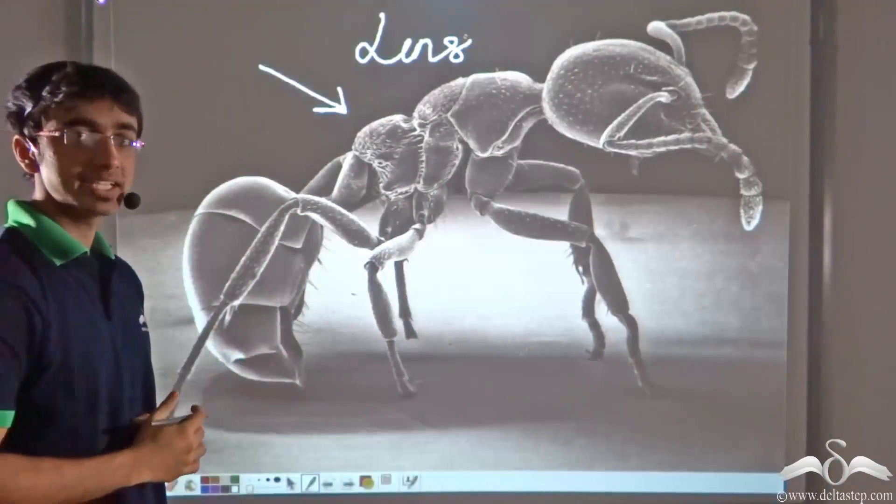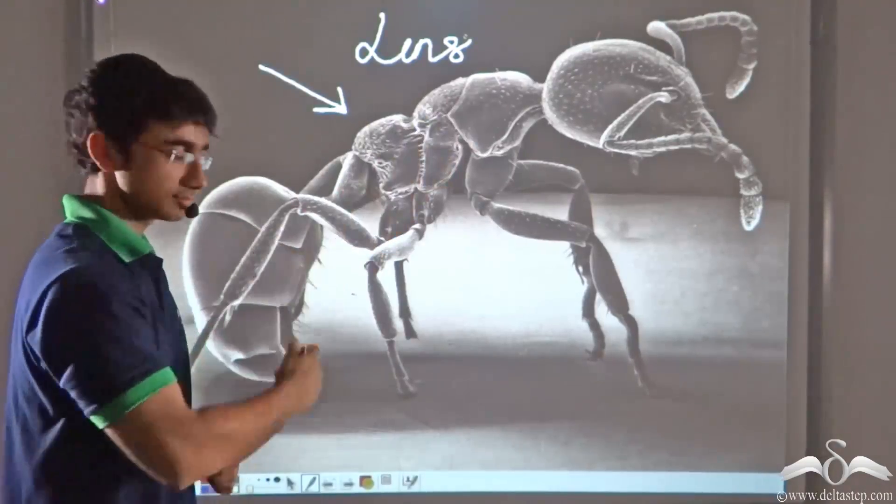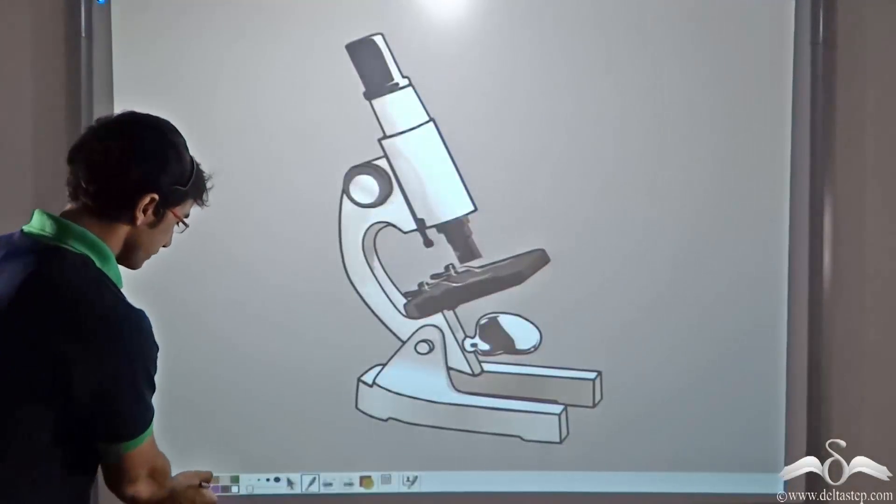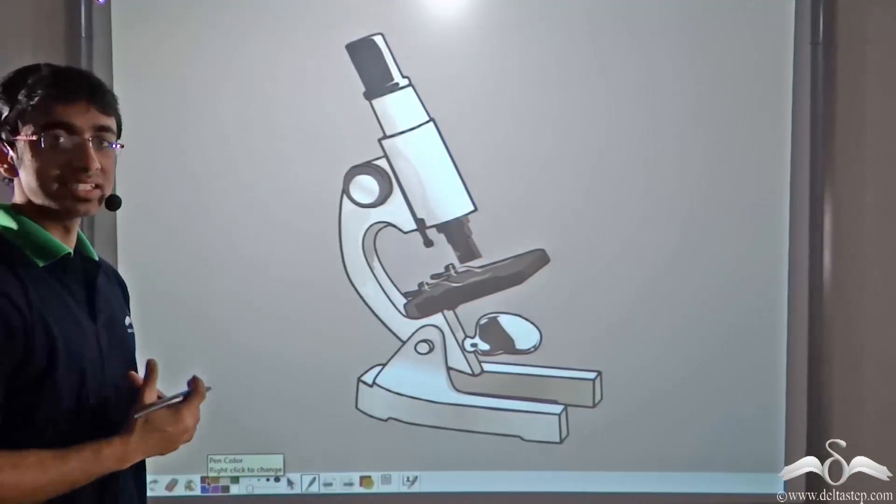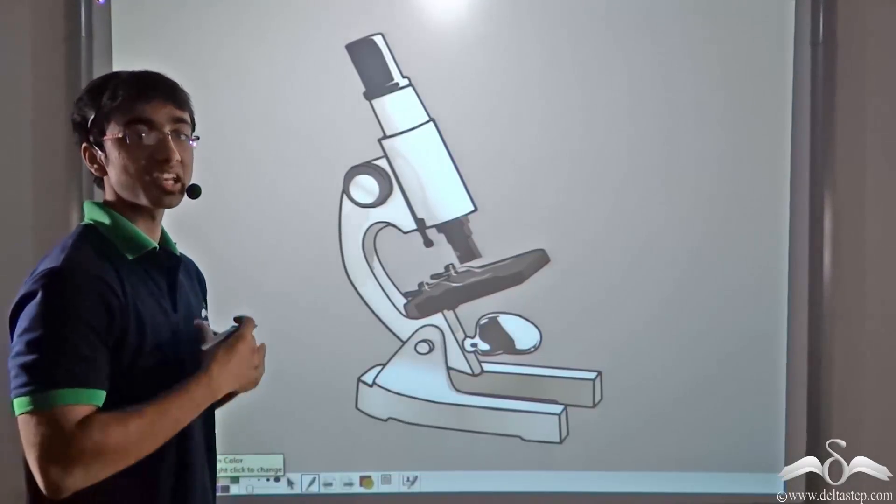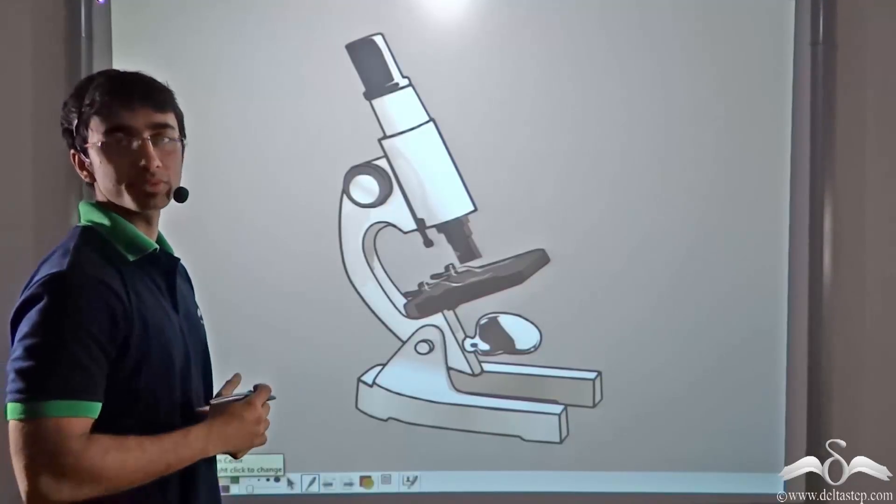Now let us see how this picture was obtained, how a small object can be made so big. This is a microscope. A microscope is a device that can help us to see small objects much larger. In other words, it magnifies the size of small objects.